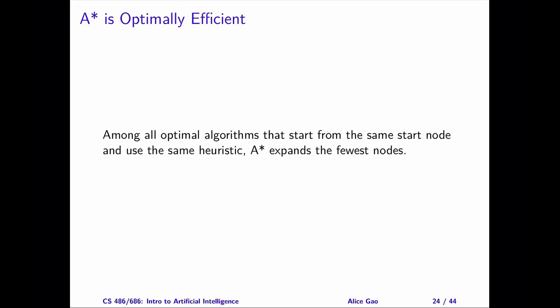In fact, we can say something stronger about A-star search. In a sense, given a heuristic function, no search algorithm could do better than A-star. Formally, this means that A-star search is optimally efficient. Among all the optimal algorithms that start from the same start node and use the same heuristic function, A-star search expands the minimal number of paths.